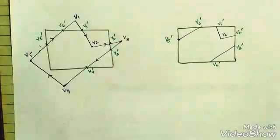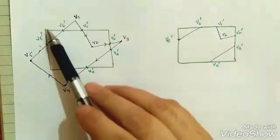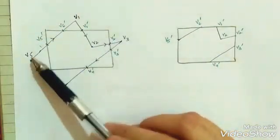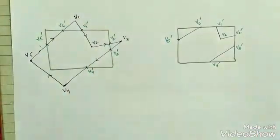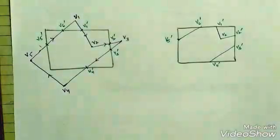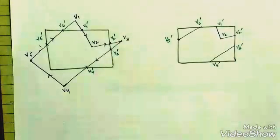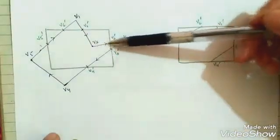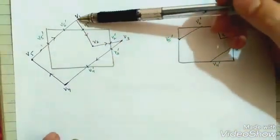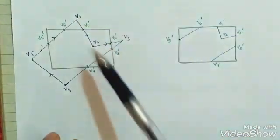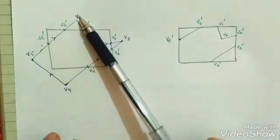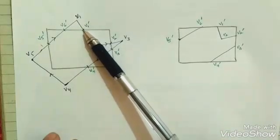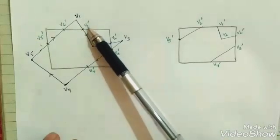Here we have an example for our algorithm. Suppose this is our window and this is the polygon which partially lies inside the window and partially lies outside. By using this algorithm and the rules which we have discussed, we are going to clip this polygon in the direction it is going. V1 lies outside the window, therefore it is rejected and we reach at this point.